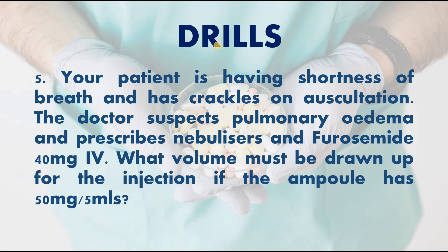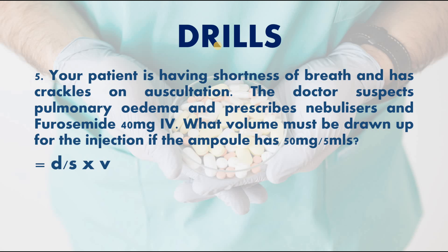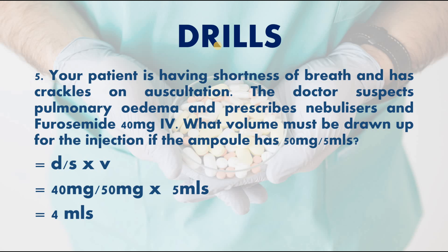Next: your patient is having shortness of breath and has crackles on auscultation. The doctor suspects pulmonary edema and prescribes nebulizers and furosemide 40 milligrams IV. What volume must be drawn up if the ampoule has 50 milligrams per 5 mils? Pulmonary edema is characterized by shortness of breath and crackles, meaning the lungs are filled with fluid. Using the formula: 40 mg ÷ 50 mg × 5 mils = 4 mils.